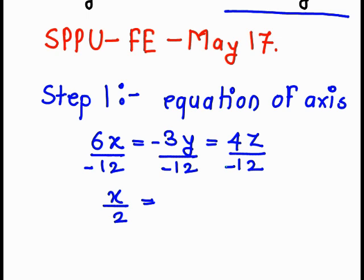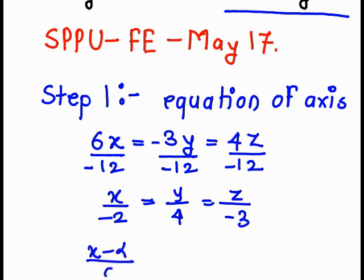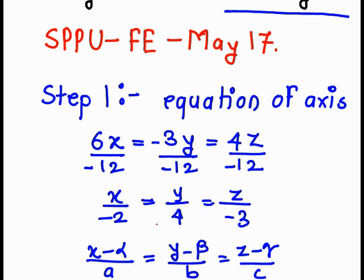Remember, we need to make the coefficient of x, y, z equal to 1. So here we divide by minus 12, and we get x upon minus 2, y upon 4, z upon minus 3. Comparing with the standard format — x minus α upon a equals y minus β upon b equals z minus γ upon c — we get the value of α as 0, a as minus 2, b as 4, and c as minus 3.